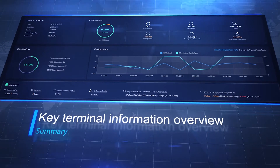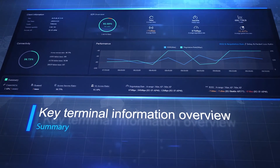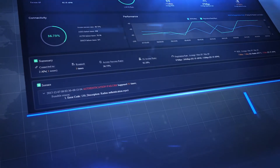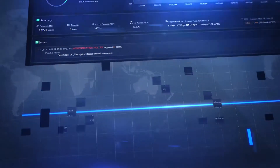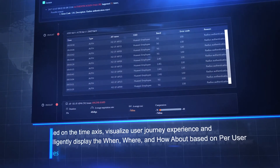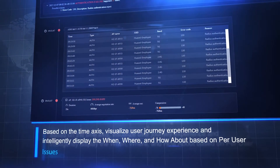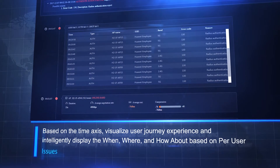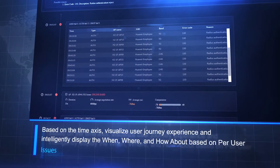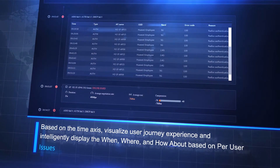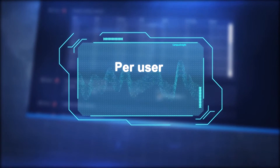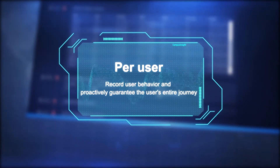The Key Terminal Information Overview displays a summary of terminal issues. Based on the time axis, it visualizes user journey experience and intelligently displays the when, where, and how for each user. Per user behavior is recorded and proactive guarantee of the user's entire journey is provided.